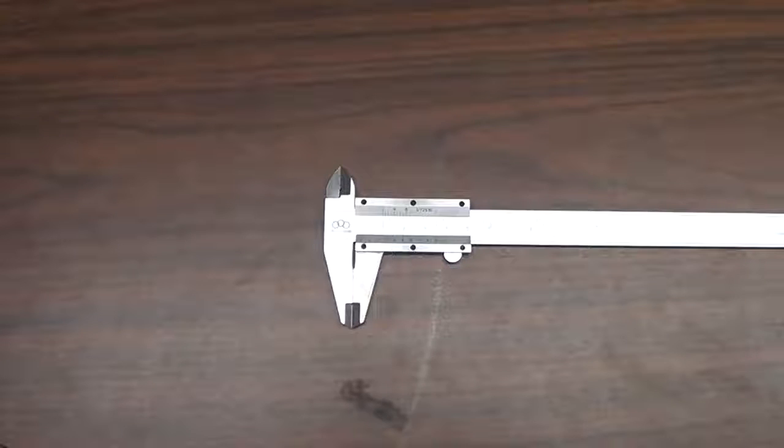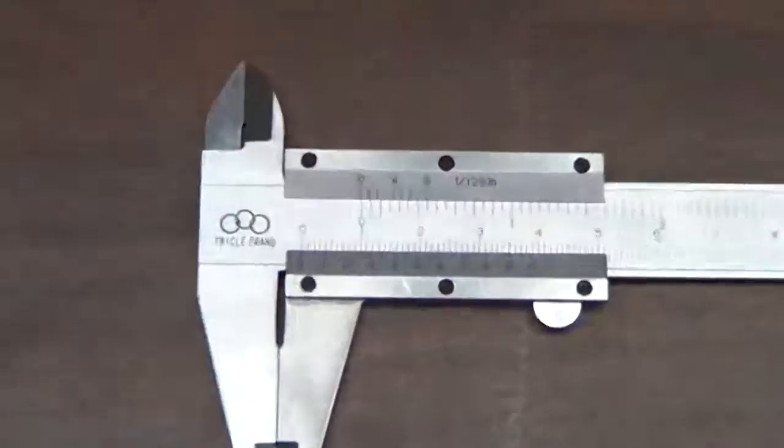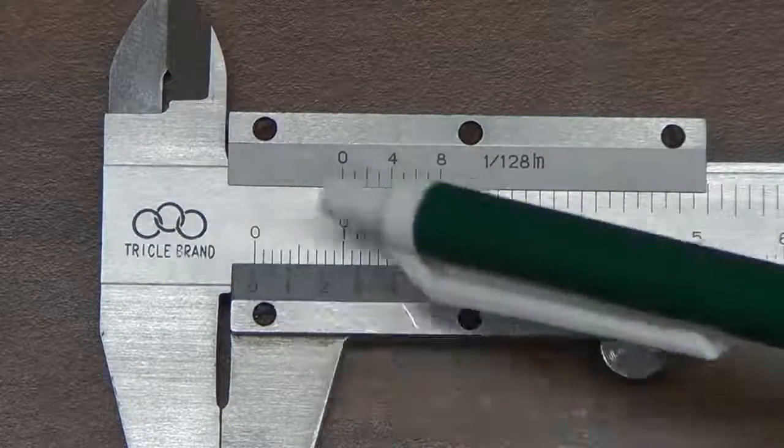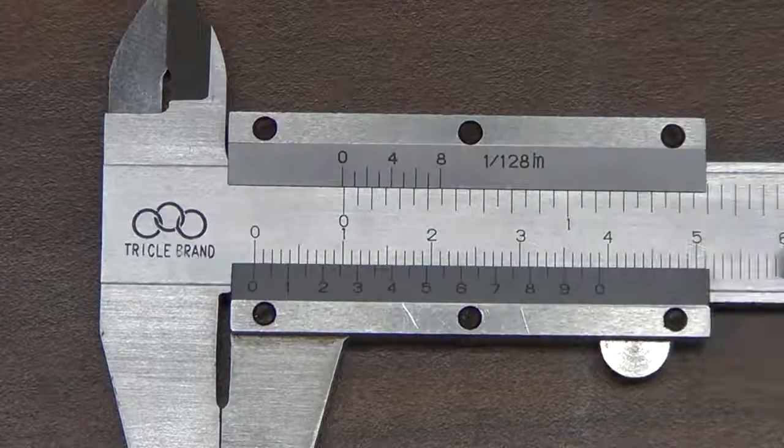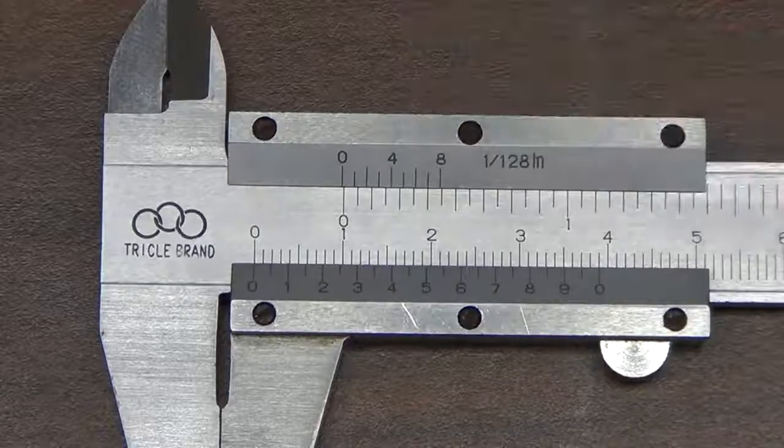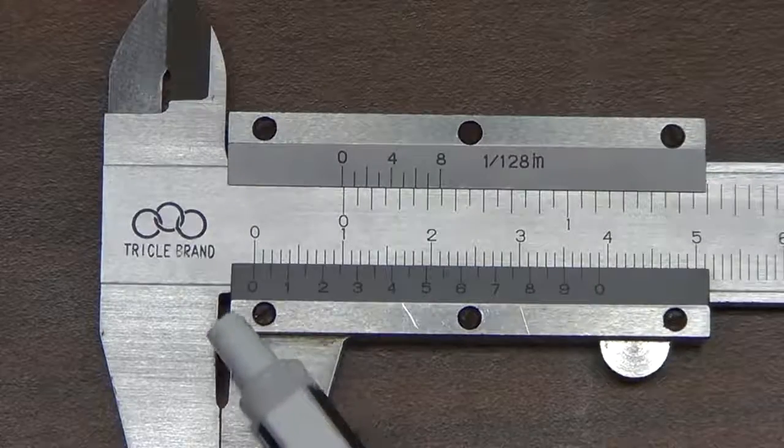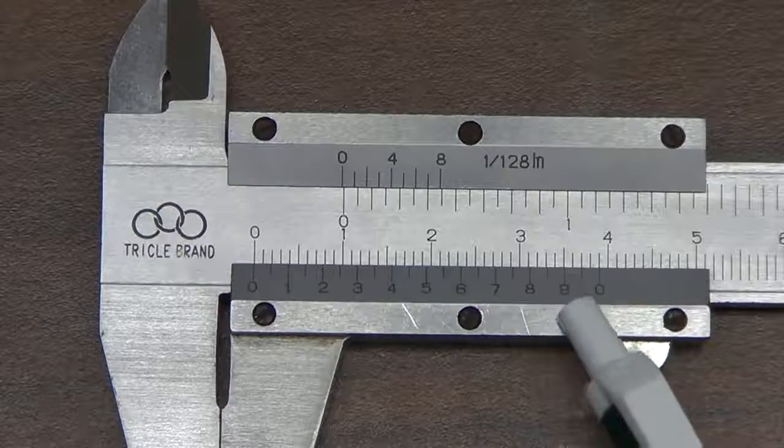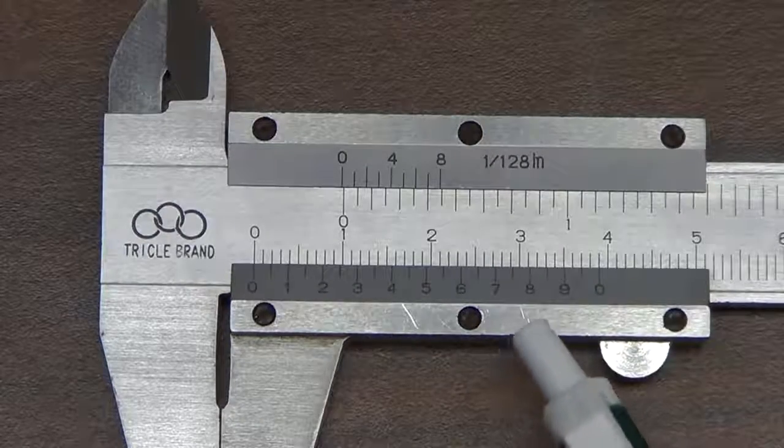Now we'll work with a vernier caliper. The way this works is that there is again an upper and lower scale. Here this is the centimeters: 0, 1, 2, 3 on this axis here, and then on the upper we have inches which we're going to neglect for our use. Then this is the lower scale down here: 0, 1, 2, 3 up to 9 and then 0 again is the minor scale.